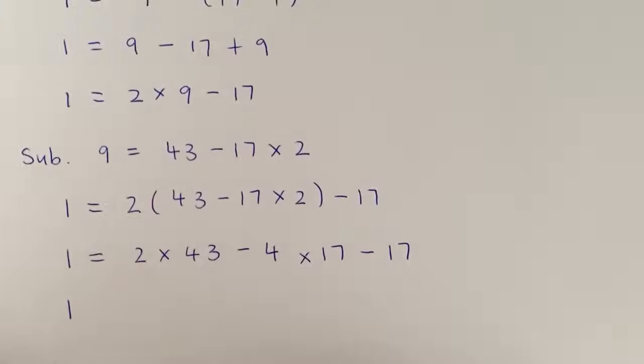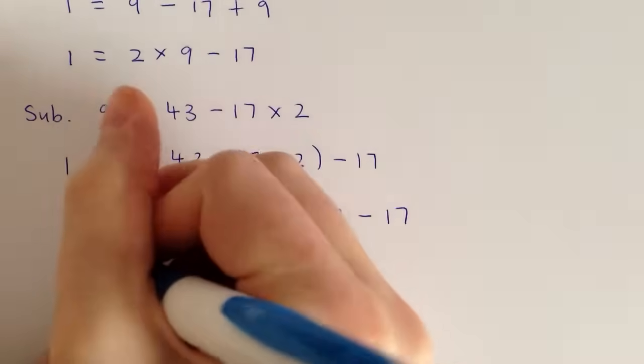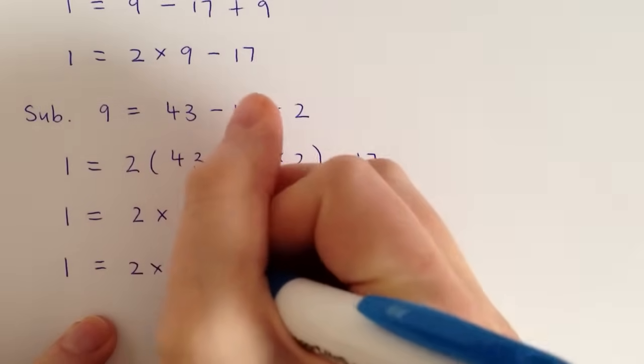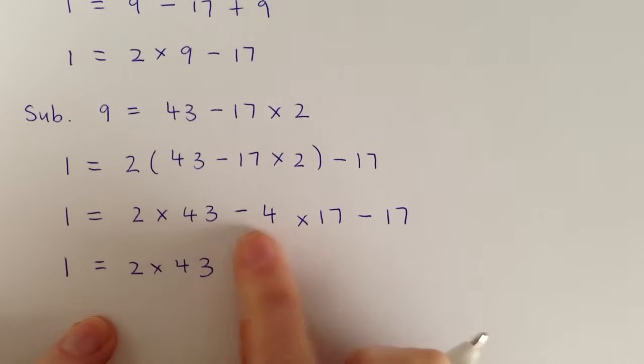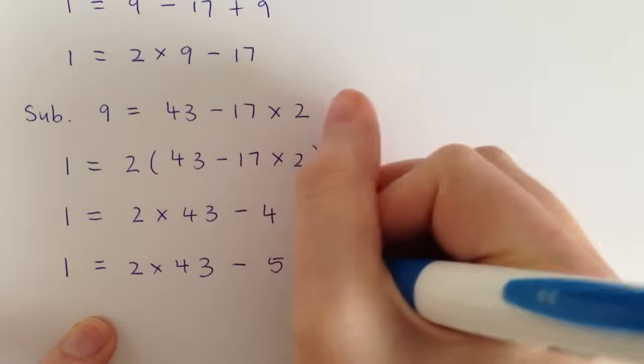So we can simplify that again. So 2 times 43, we've got a negative 4 times 17, and a negative 1 times 17. So that's negative 5 times 17.